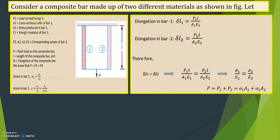P1 is the load carried by bar 1. A1 is the cross-sectional area of bar 1. Sigma 1 is the stress produced in bar 1. E1 is the Young's modulus of bar 1. Similarly, P2, A2, sigma 2 and E2 are the corresponding values of bar 2. P is the total load on the composite bar, L is the length of the composite bar, and delta L is the deformation — the elongation — of the composite bar.